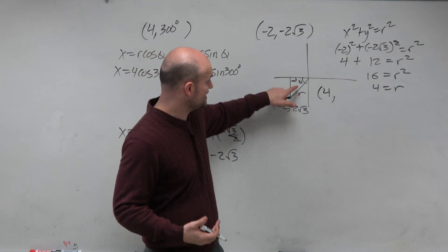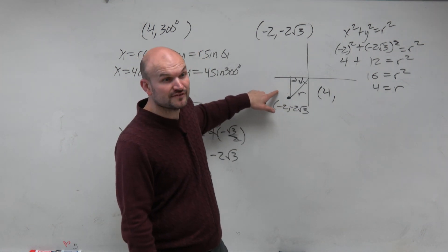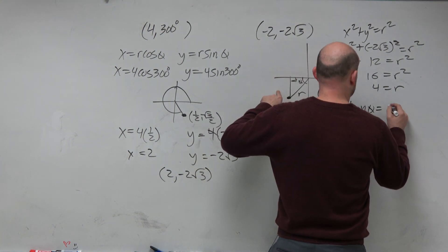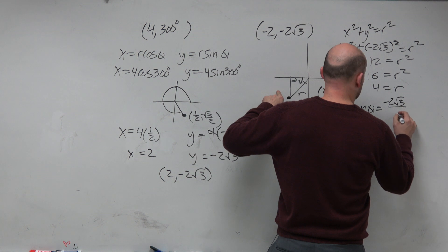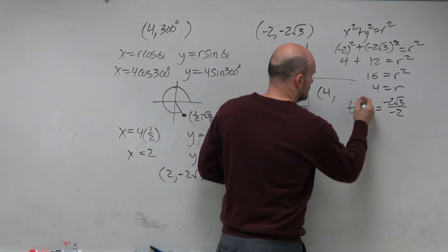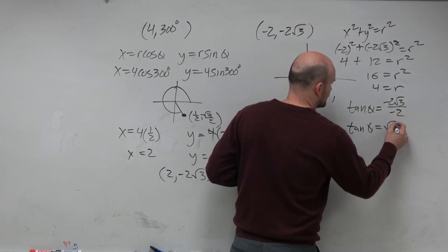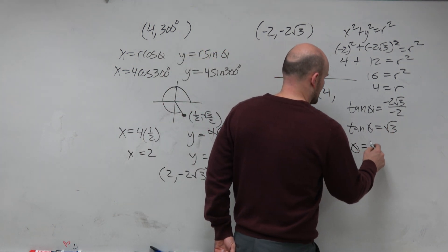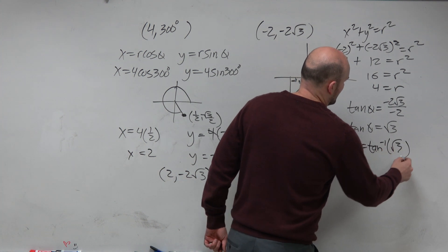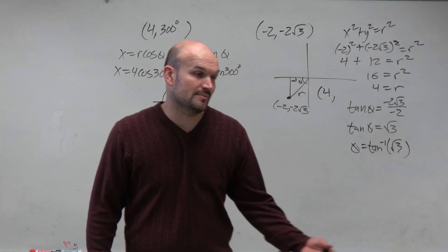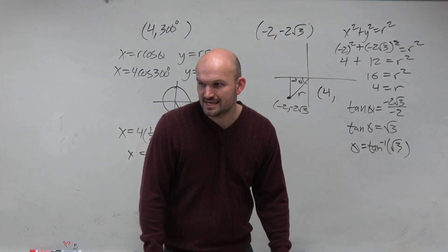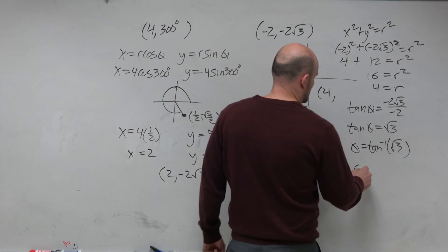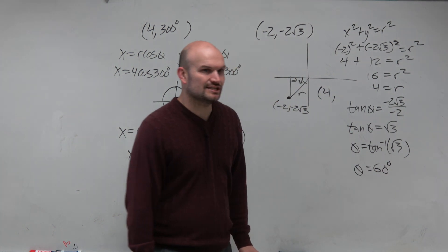So again, our formula, we recognize if I have two sides of a triangle and I need to figure out the angle, then I'm going to use tangent of theta equals negative 2 square root of 3 over negative 2. Well, that simplifies to tangent of theta equals the square root of 3. And then remember, you could say theta equals tangent inverse. And again, you could check your calculator. You'd want to make sure that it's in degree mode. But hopefully you guys recognize the tangent of what angle gives me square root of 3. Based on the unit circle, that's going to be 60 degrees.